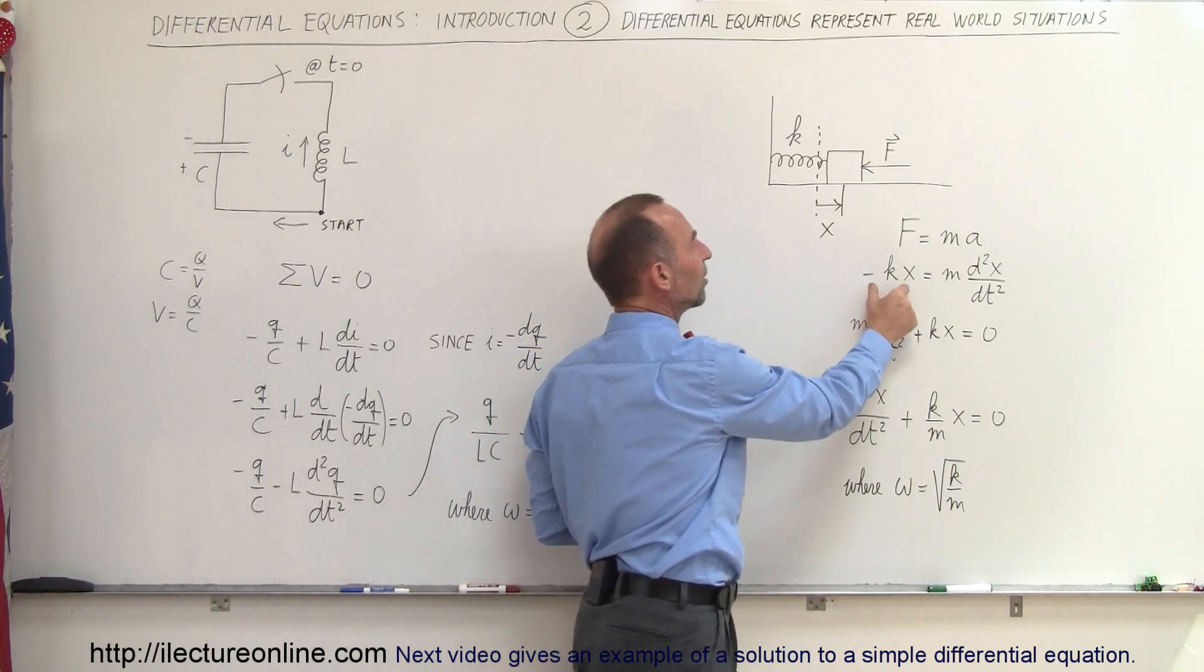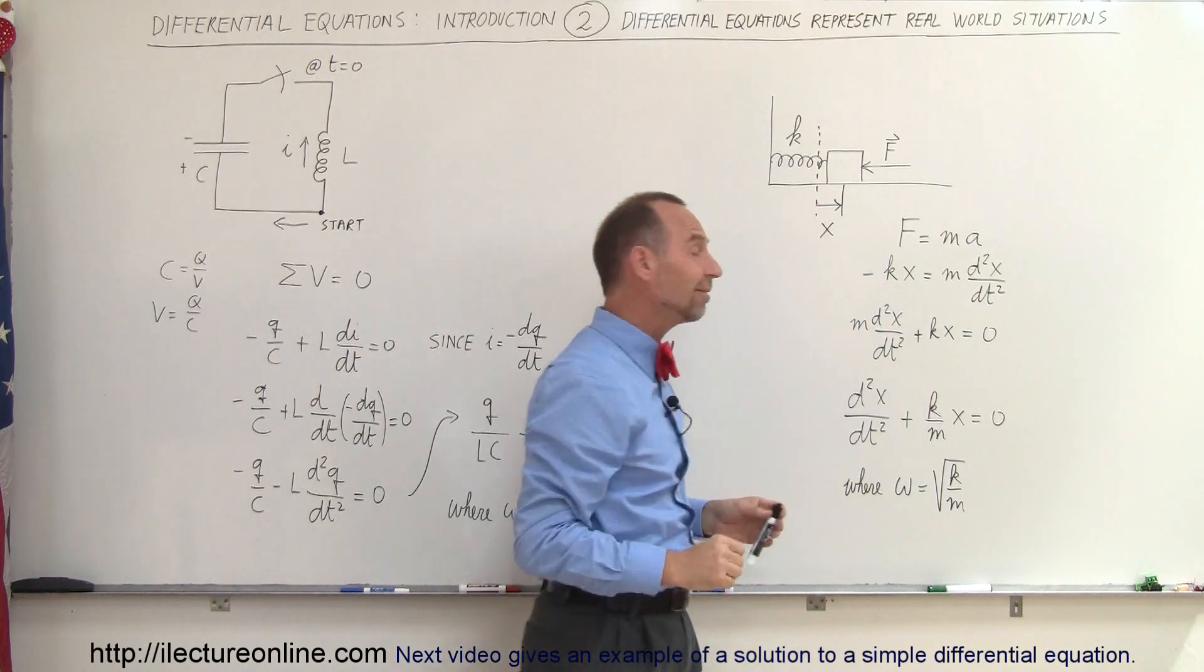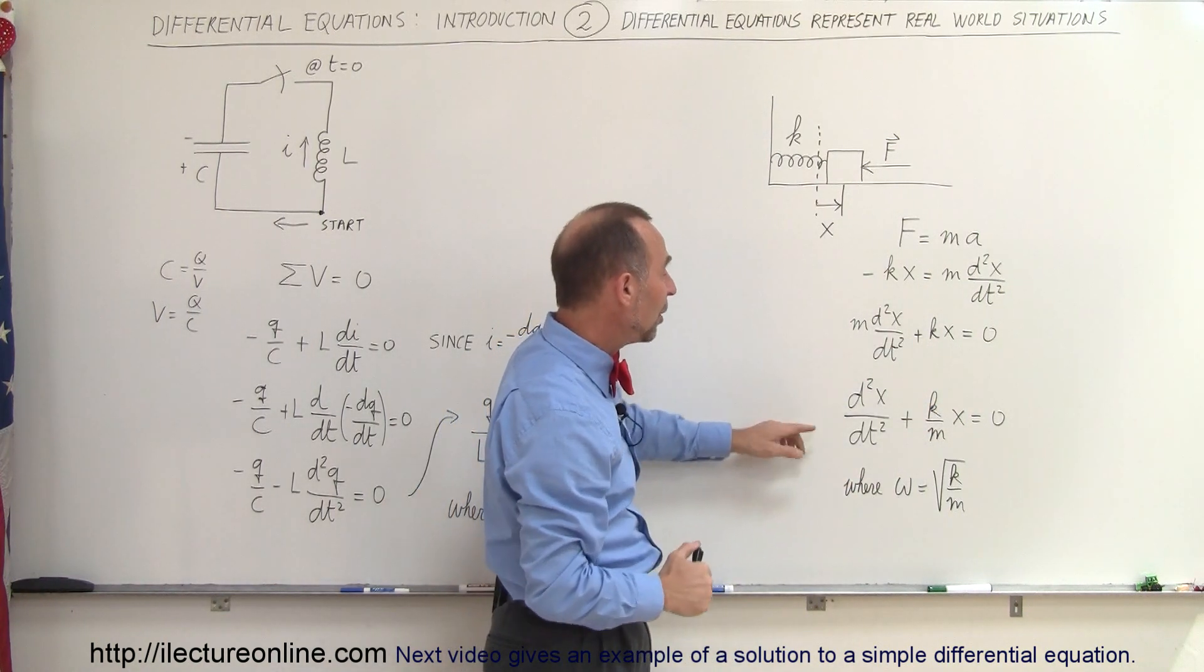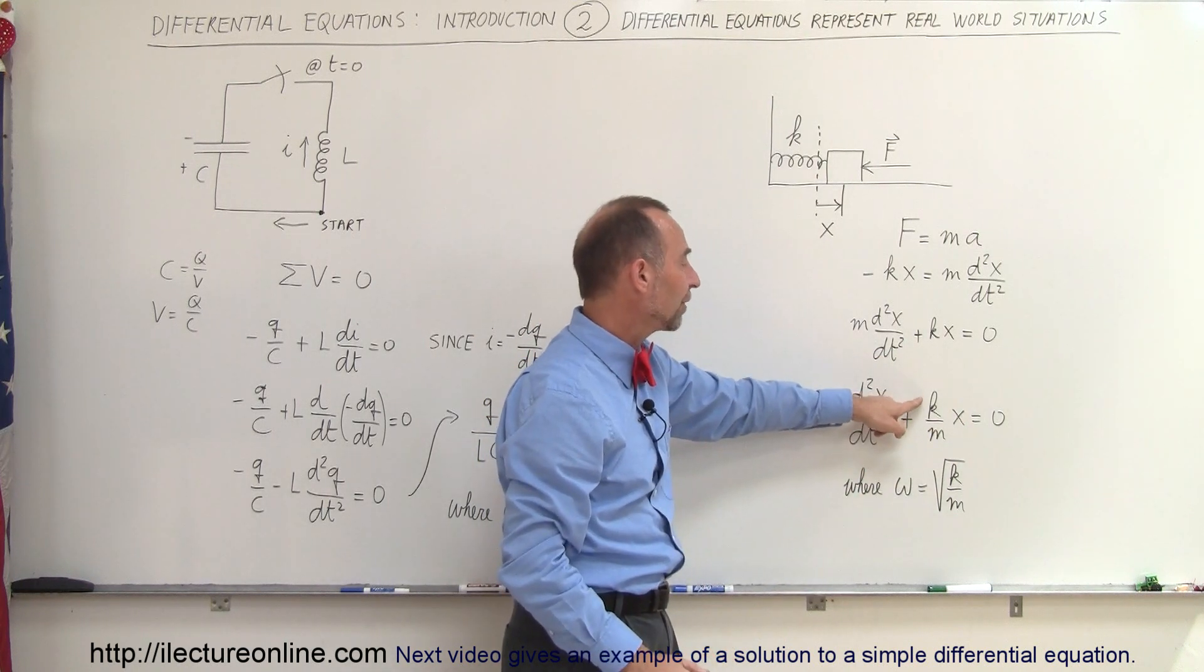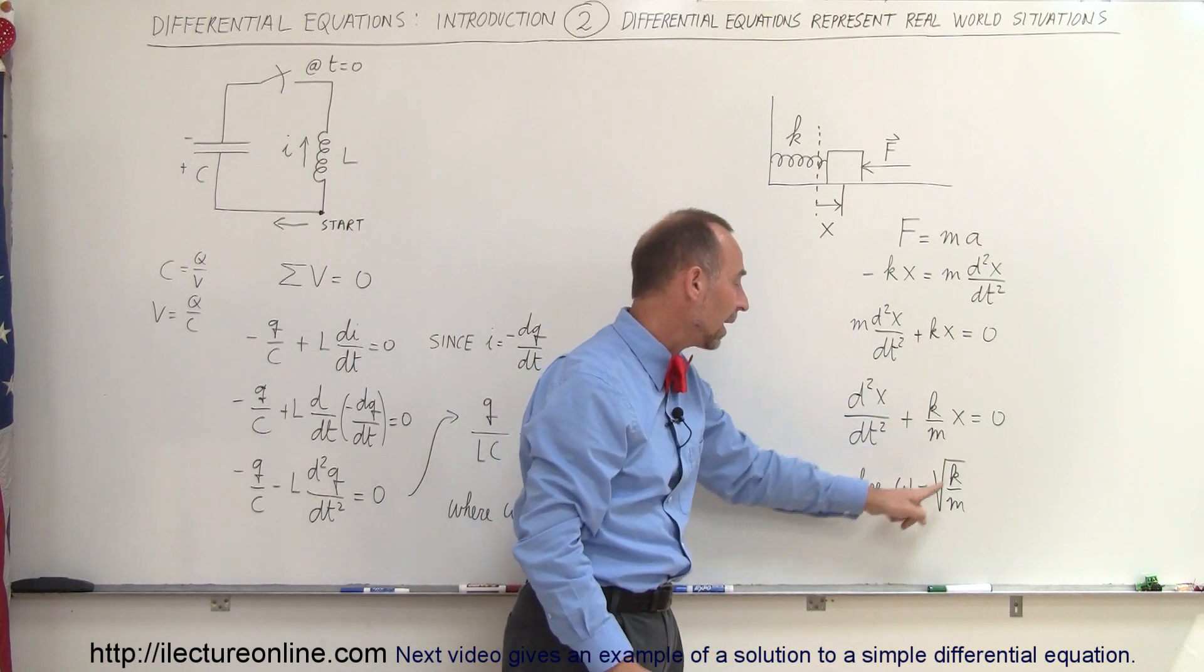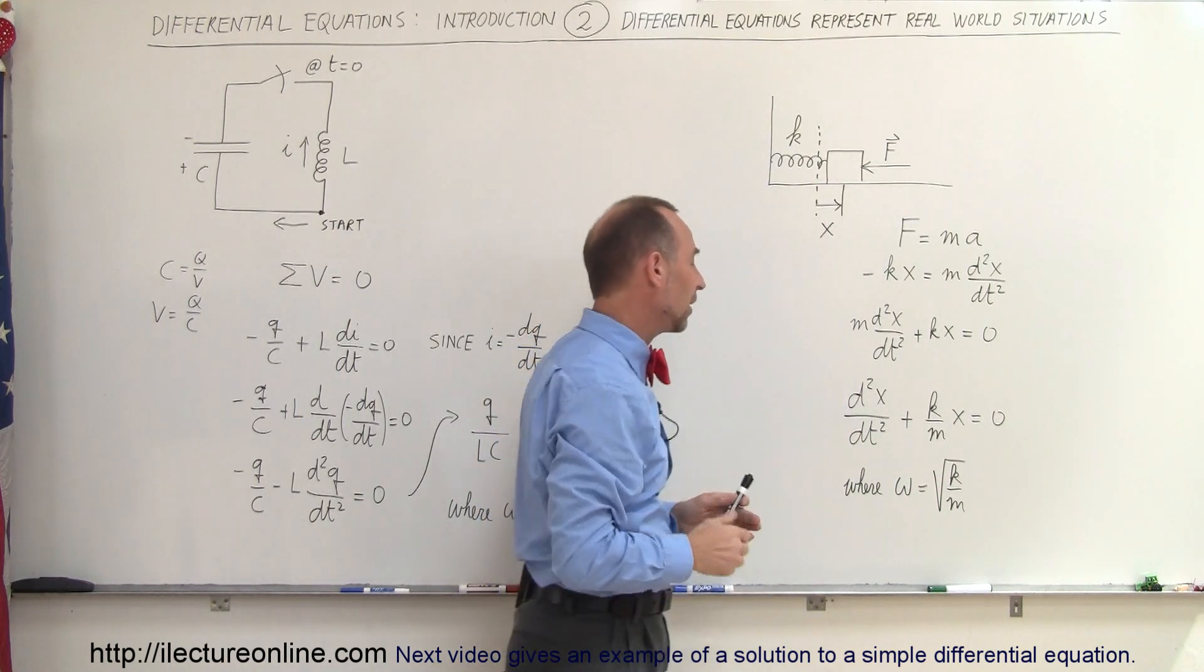If we now move the minus KX to the other side, make it positive, and switch the equation around, it looks like this. And finally we divide both sides of the equation by M, we can write the differential equation like this, where the ratio of K over M, if we take the square root of that, is equal to the oscillatory frequency of the mass based upon that spring.